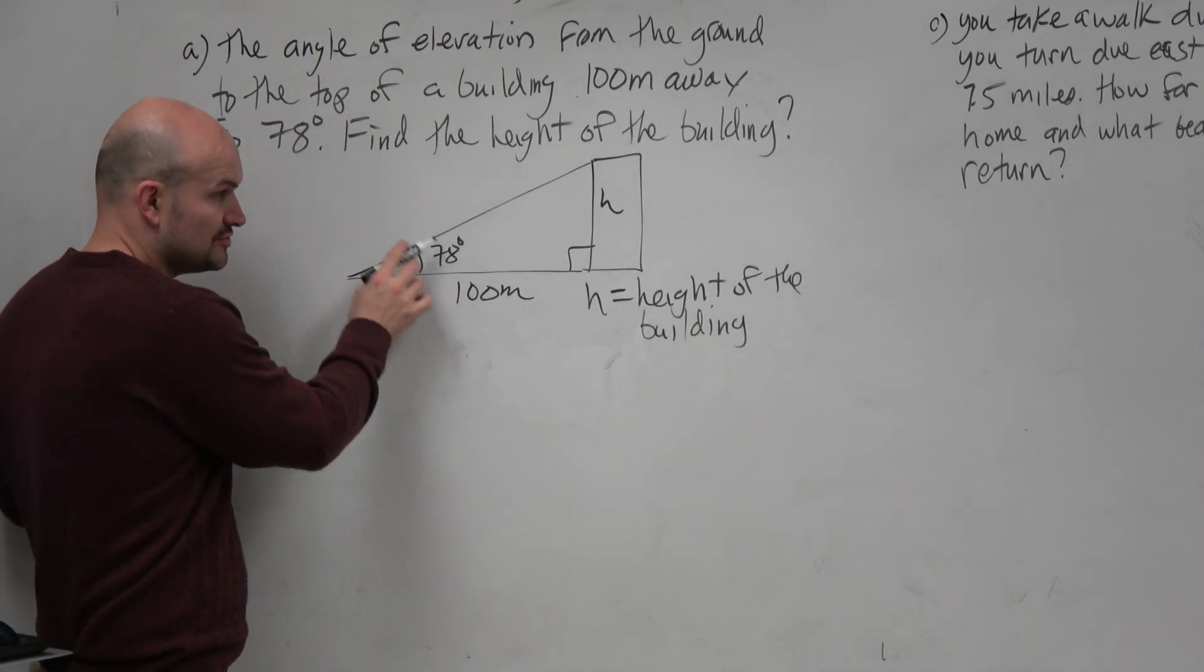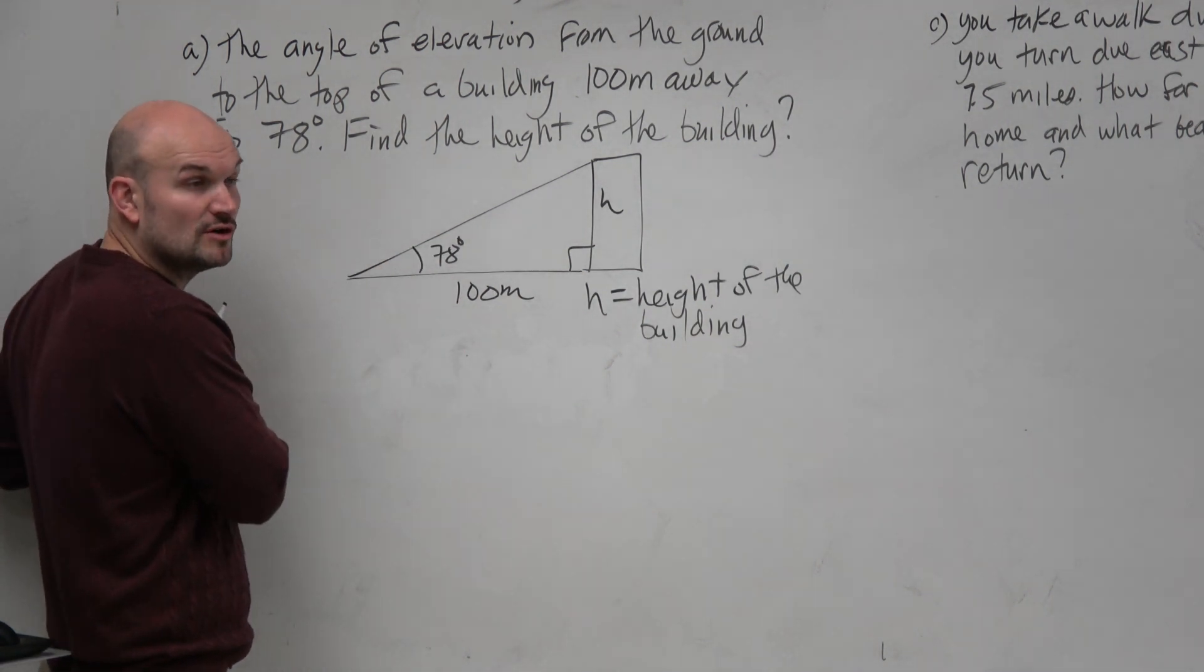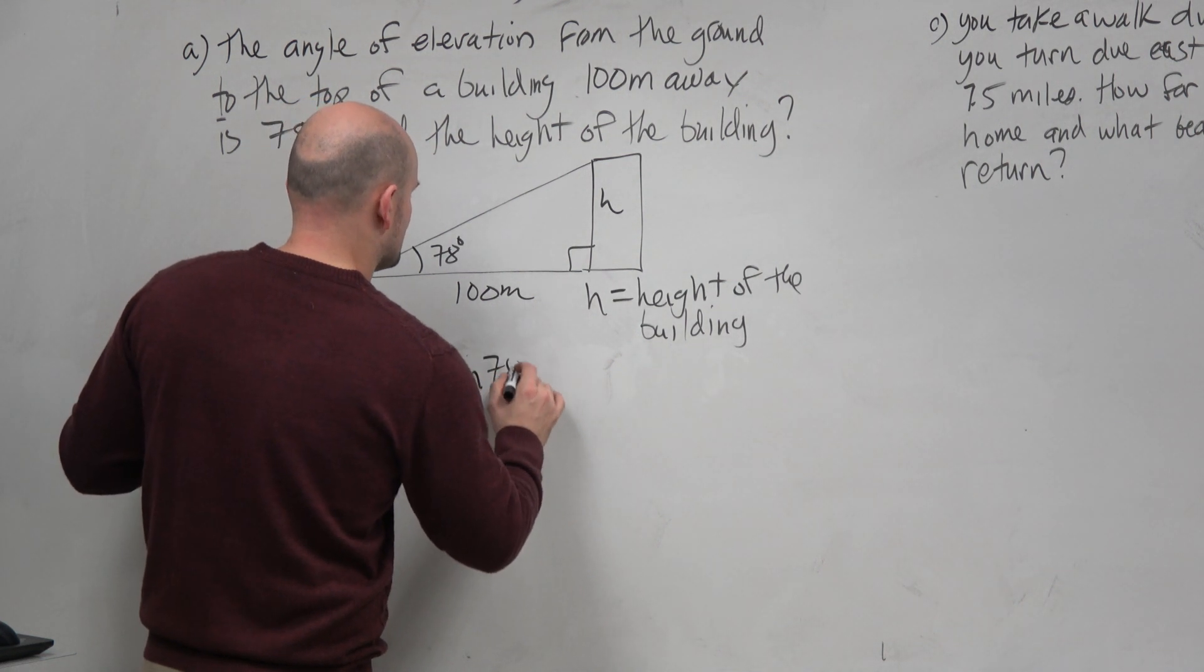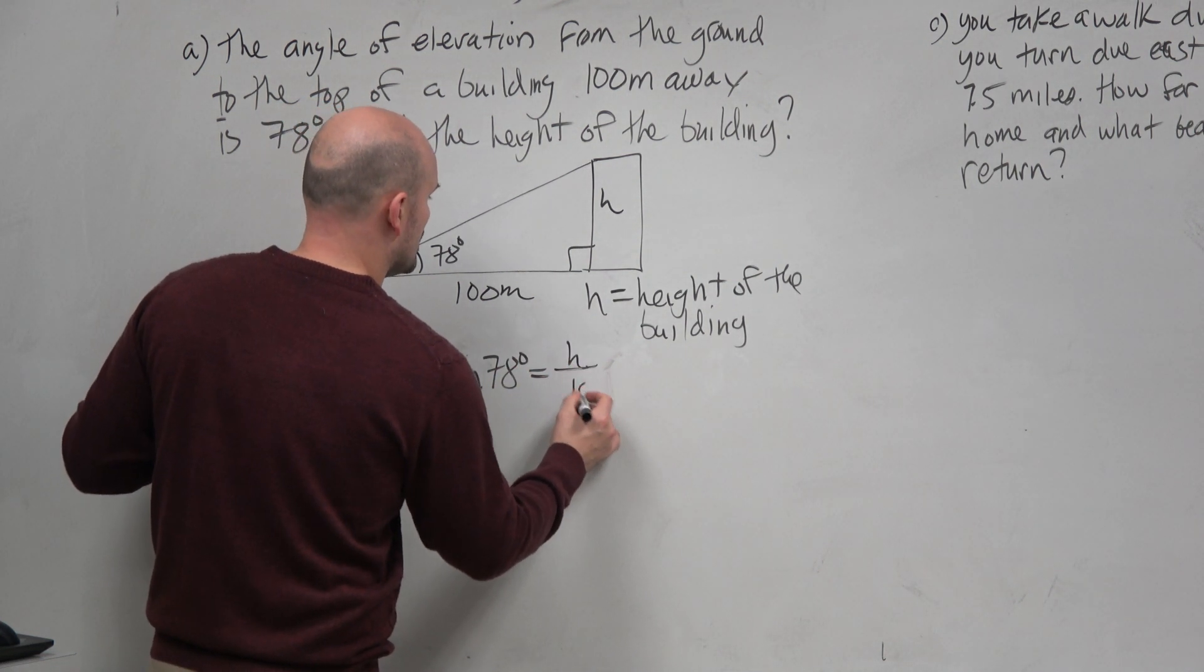So now I have a triangle. I have two measurements. Can I create a trigonometric function? Yeah, I can say the tangent of 78 degrees equals H over 100.